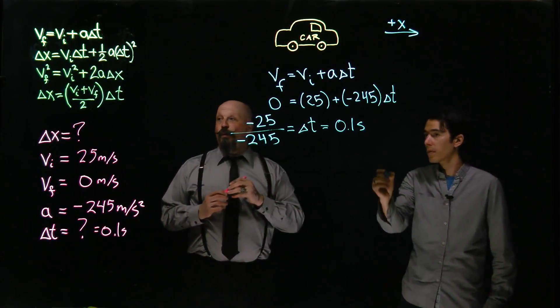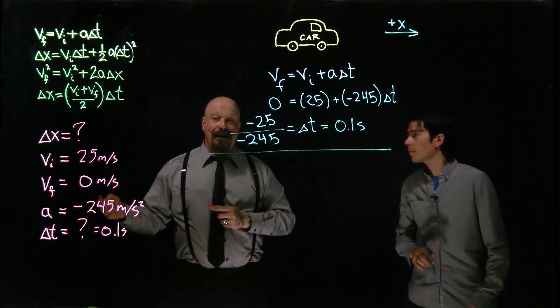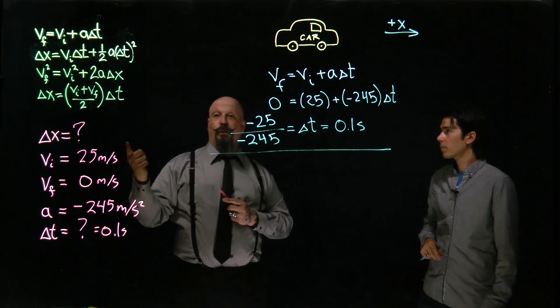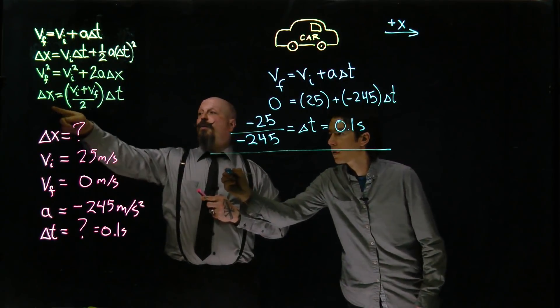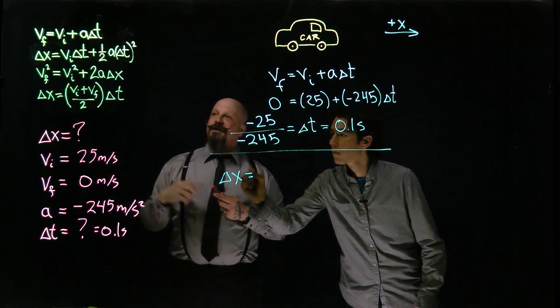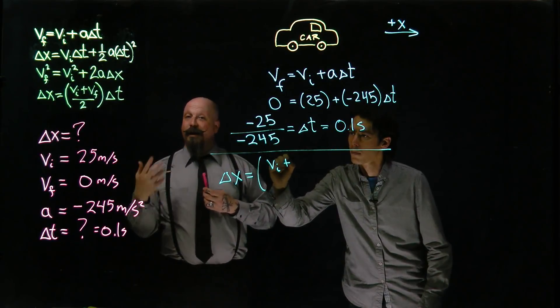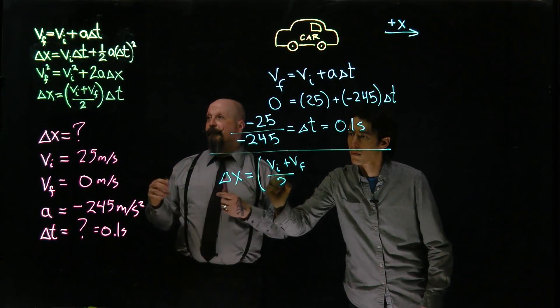Now that we actually have that time, we've got all the other variables that we need to solve for delta x. We can use any of these equations. Let's go with this last one. It's an easy setup. Delta x is equal to v initial plus v final, divided by 2, multiplied by the change in time.